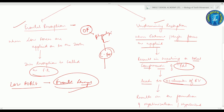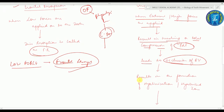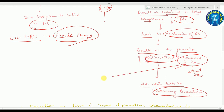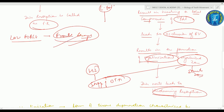High forces cause crushing or total compression of the periodontal ligament, leading to occlusion of the blood vessels. This results in the formation of a hyalinized zone, which is a sterile zone. The formation of the hyalinized zone leads to undermining resorption and stops orthodontic tooth movement. Light forces cause frontal resorption; heavy forces cause hyalinization and undermining resorption.